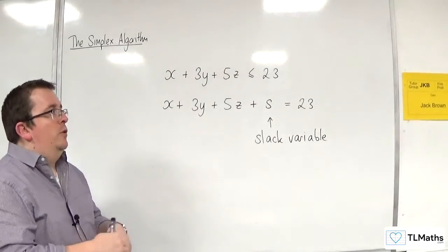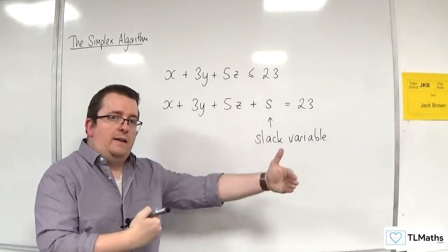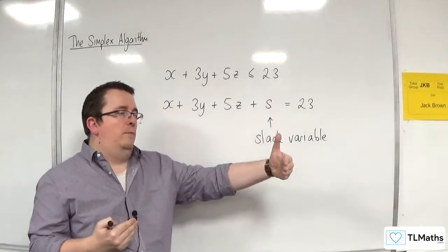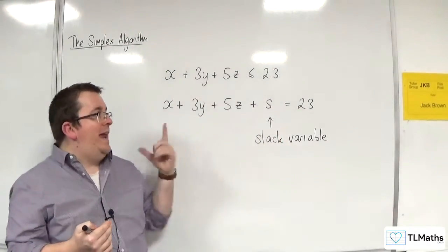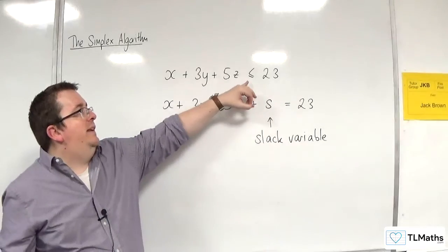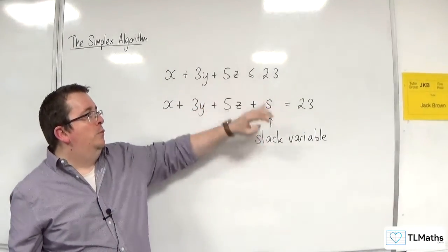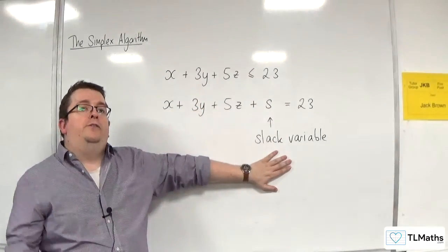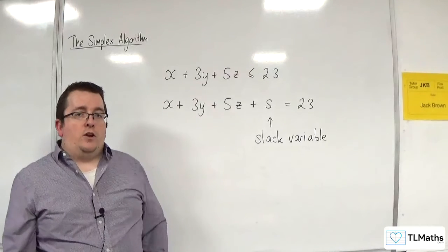But this is a slack variable because it's taking up the slack that allows you to get up to the 23. So for any inequality that is less than or equal to, we must add on a slack variable to make it into an equality.